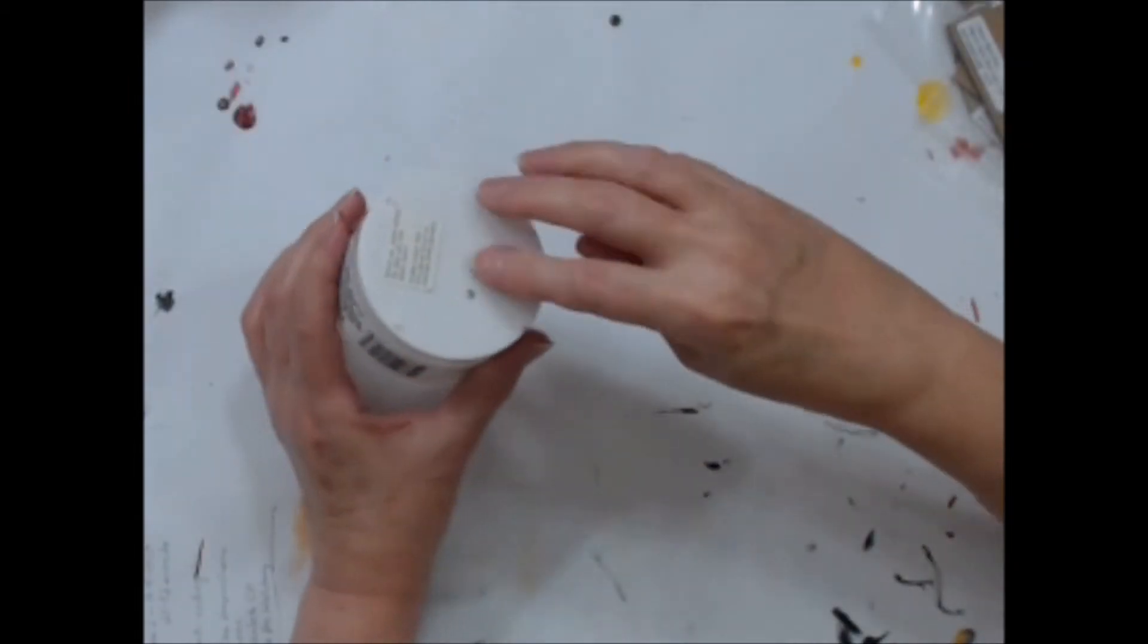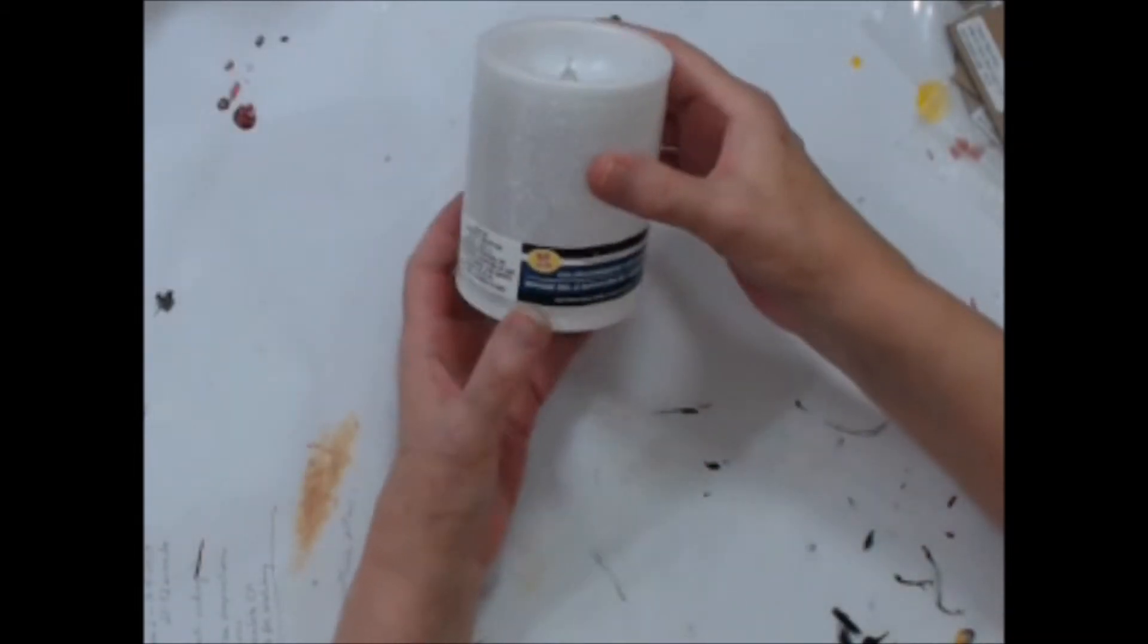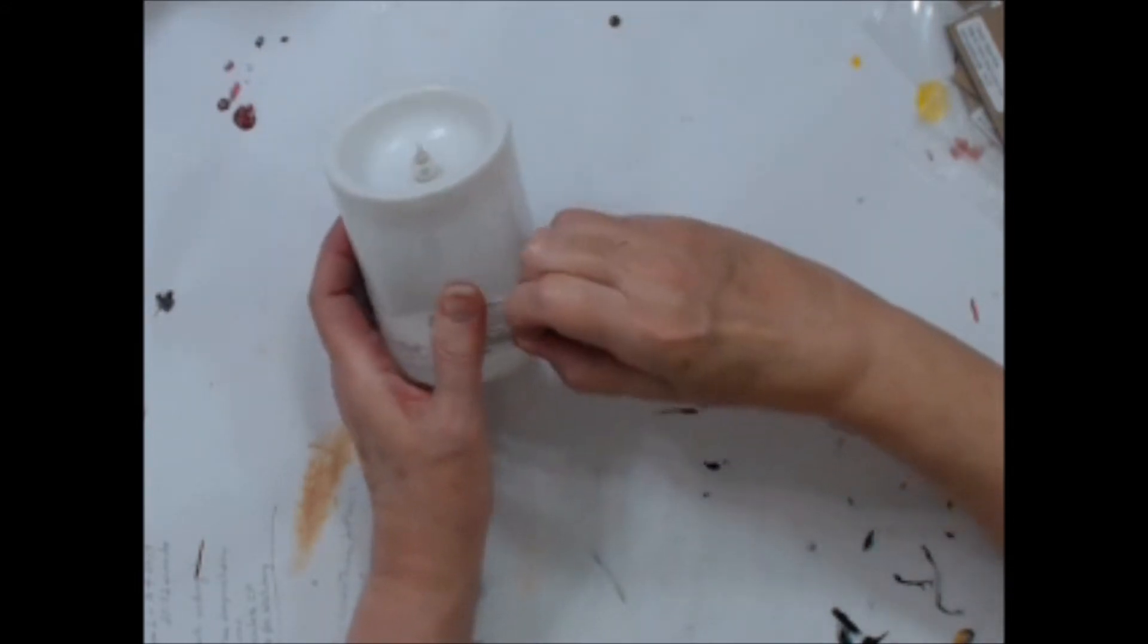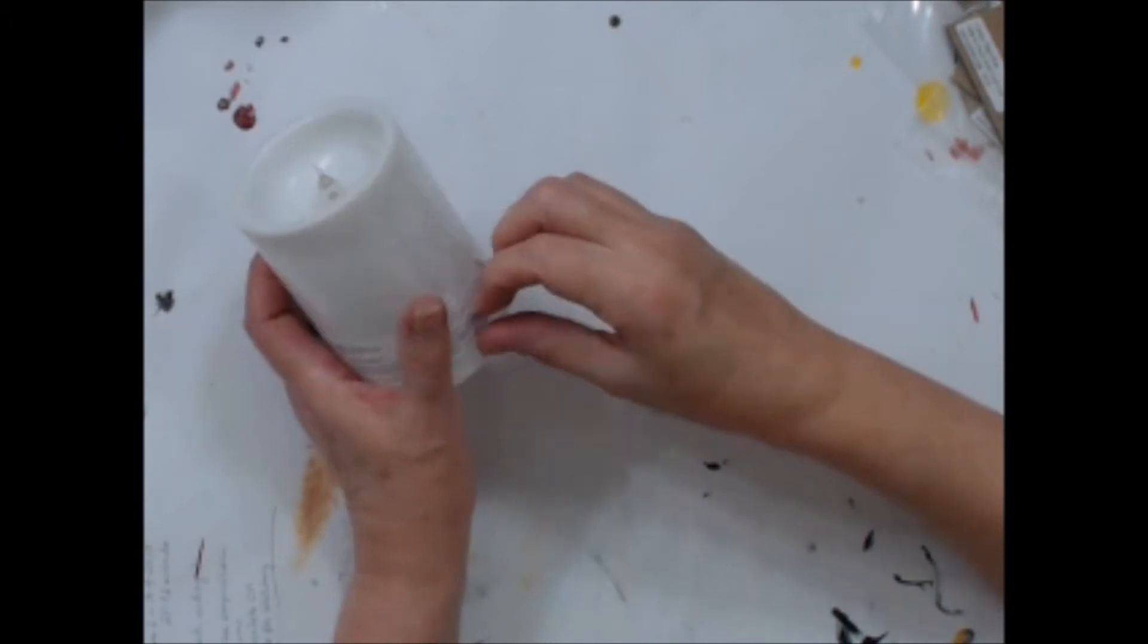So first let's start taking it apart. The label says it is a color changing battery operated LED candle. So let's remove the labels first and the plastic bit that's keeping the battery from running down.